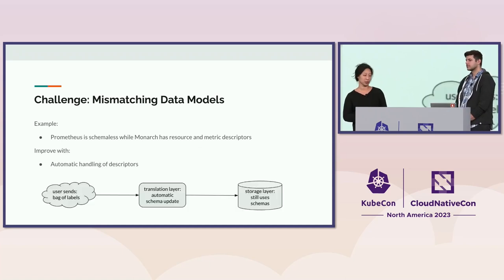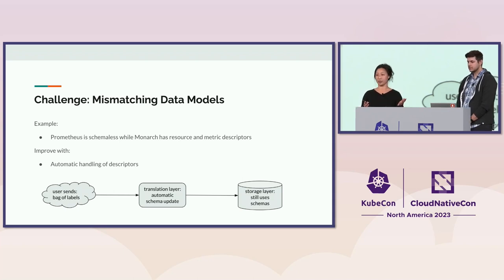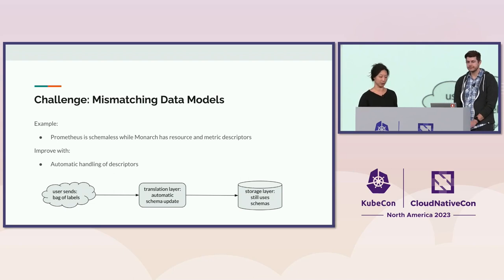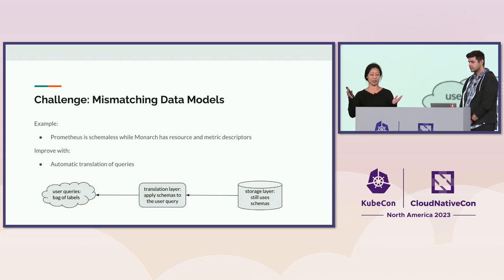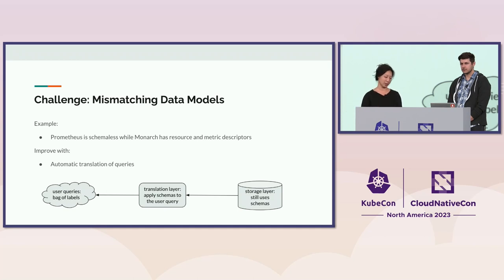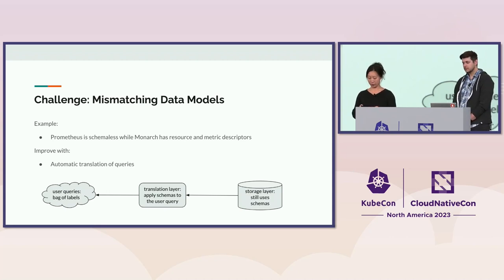On the query side, our translation layer takes the PromQL query sent by the user, compares it to the schemas, and generates a query — in our case translating PromQL to MQL, which is Monarch's query language. That query only references valid labels according to the schemas, so Monarch is seeing the same thing as always, and the translation layer handles the other labels according to PromQL semantics.